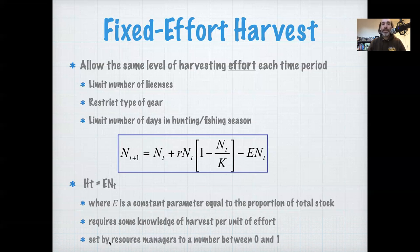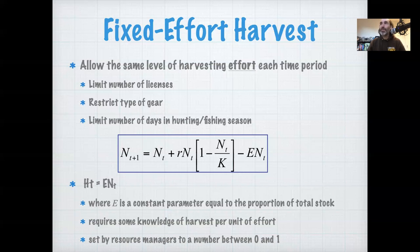In this formulation, this effort parameter E is set by resource managers to be between 0 and 1, because it represents the proportion of the species that's harvested and you can't harvest over 100% or negative percents. If you wanted to model the reintroduction of a species, you could model a negative effort, but even there that would probably be better modeled with a negative quota, because you're introducing a certain number of individuals.